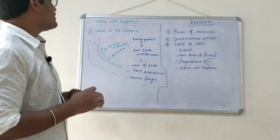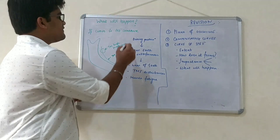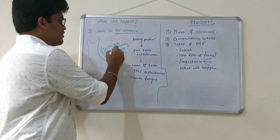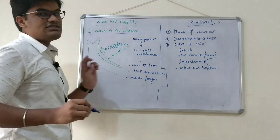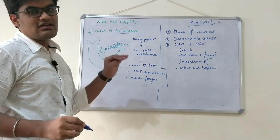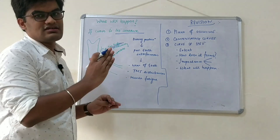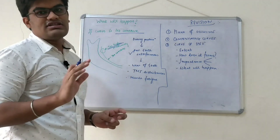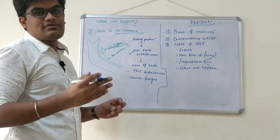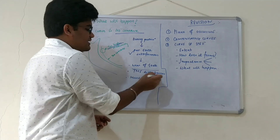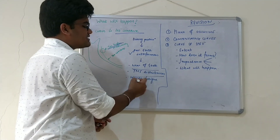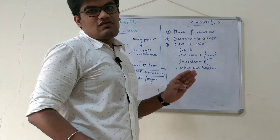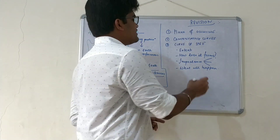What happens if the curve is too concave or too high posteriorly? If the curve is too high, the posterior teeth will be higher, and during protrusion the posterior teeth would definitely cause interferences. We know what happens next: wear of teeth, TMJ disturbances, and muscle fatigue.